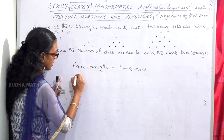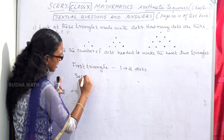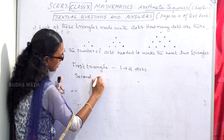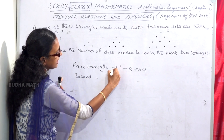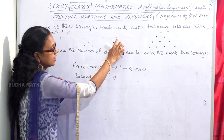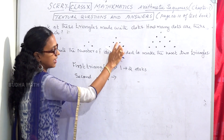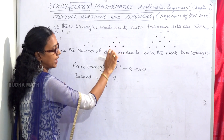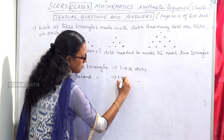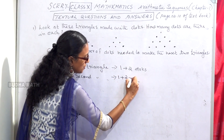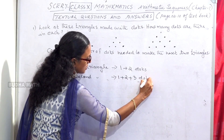Alright. Second triangle. Let's put the dots. Second triangle: 1, 2, 3. That is 1 plus 2 plus 3.